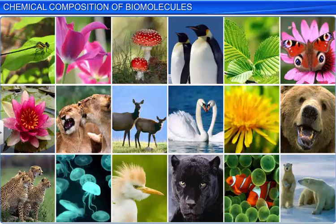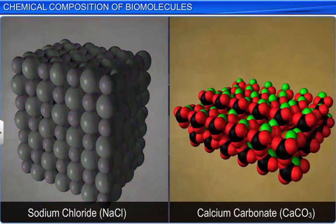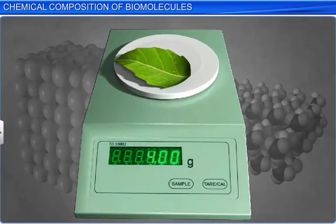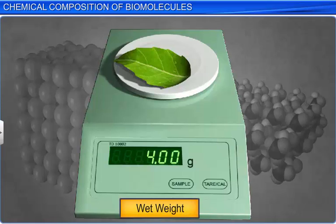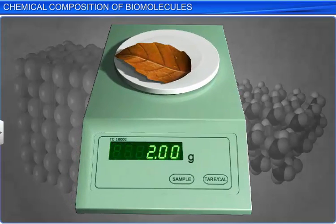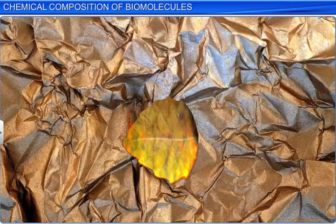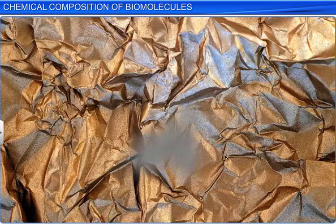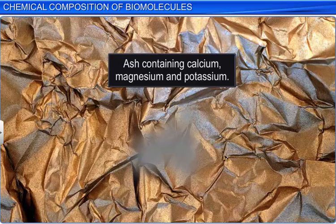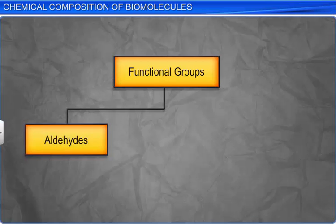Living beings are also composed of inorganic compounds such as sodium chloride and calcium carbonate. To analyze the constituents of inorganic compounds, we take a small amount of living tissue such as a leaf and weigh it — this weight is known as wet weight. We then dry the leaf to allow the water to evaporate to get its dry weight. When we burn the leaf, the carbon compounds get oxidized and the leaf releases carbon dioxide and water vapor. The remaining ash contains inorganic elements such as calcium, magnesium, and potassium. Analysis of compounds helps us identify organic and inorganic constituents in a living tissue, as well as functional groups such as aldehydes, ketones, and aromatic compounds.